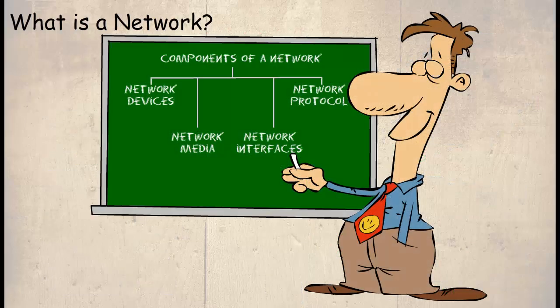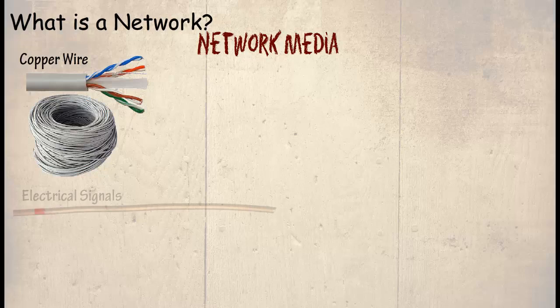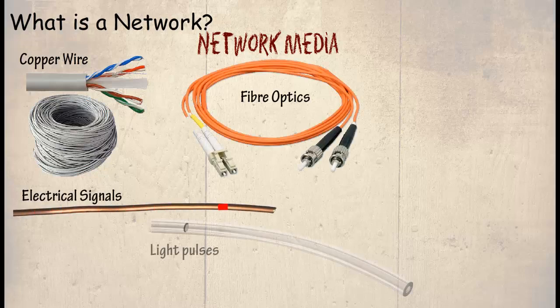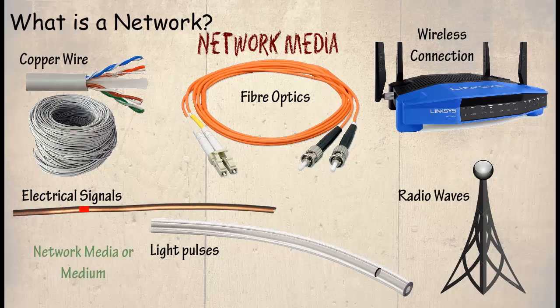The network devices must be connected to each other in some way. The connection can be in the form of copper wire communicating through electrical signals, fiber optic cables communicating through light pulses, or a wireless connection using radio waves.